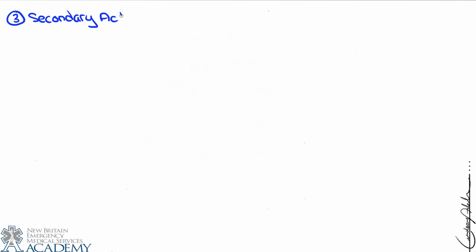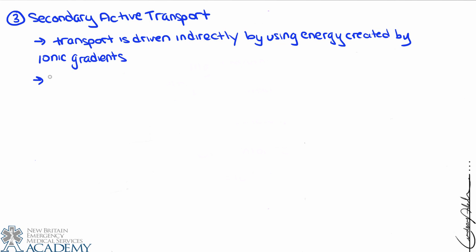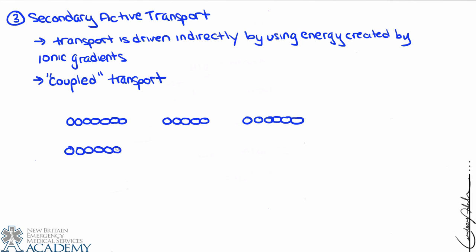Finally we come to secondary active transport — the last example of carrier-mediated transport. Secondary active transport is driven indirectly by energy created by ionic gradients. Secondary active transporters may be carrier proteins or ion channels, and we can describe it as coupled transport, meaning it's always associated with or connected with something else.